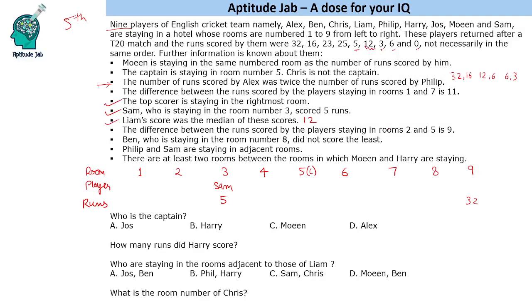The difference between certain scores is 9. Ben is staying in room number 8 and did not score the least. Philip and Sam are in adjacent rooms. Now revisiting the clues — Moeen cannot stay in room 3 because that is Sam's room, and he cannot have 5 runs because Sam scored 5. So Moeen must be in room number 6, and he scored 6 runs. This eliminates the 12 and 6, and 6 and 3 possibilities for Alex and Philip. Therefore Alex scored 32 runs and Philip scored 16 runs. Alex must be placed in room 9.